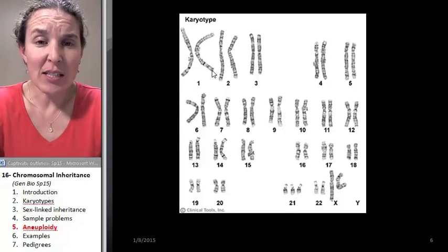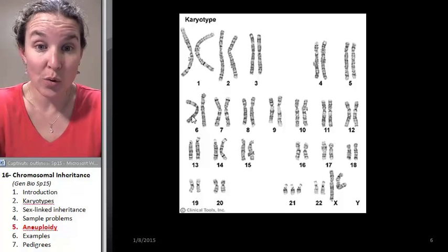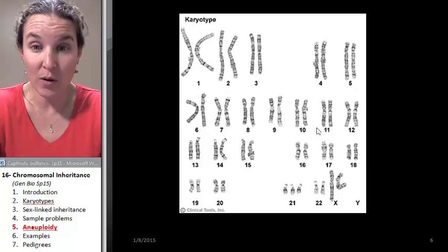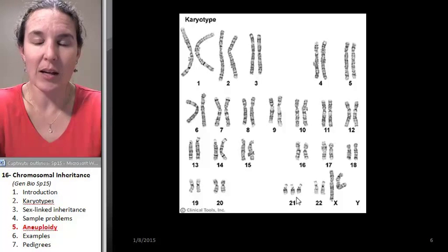The way you're going to diagnose this is you're going to look through and see - you would expect two chromosomes in every category. So far, so good. We've got two chromosomes of every type so far. There we go until we get here.